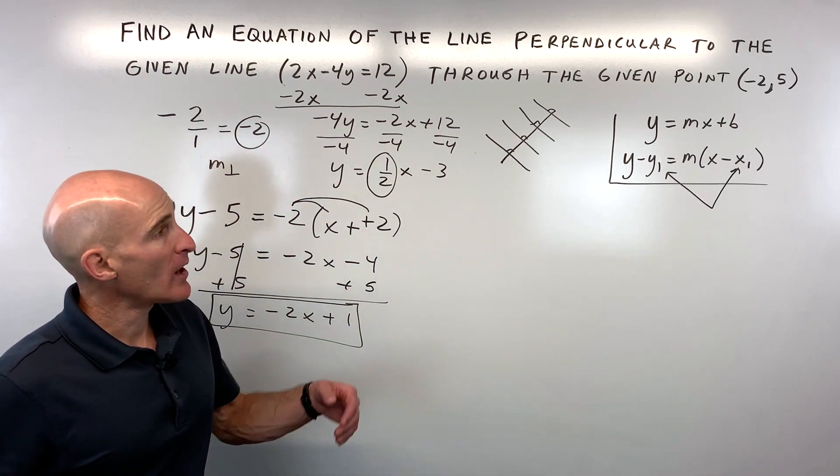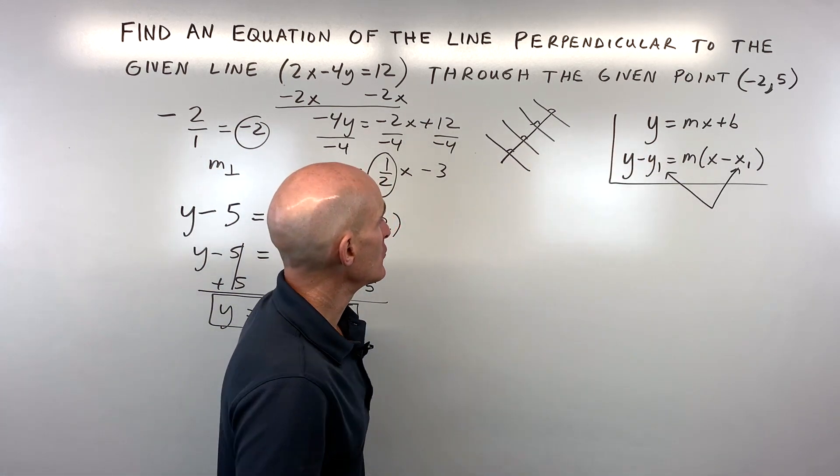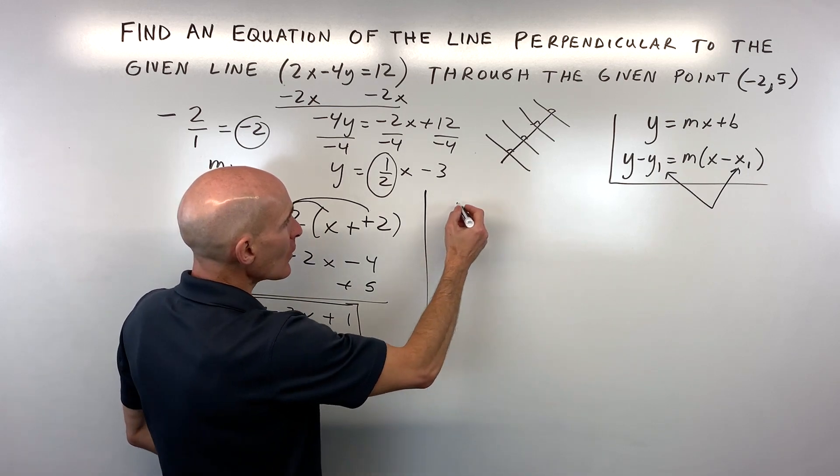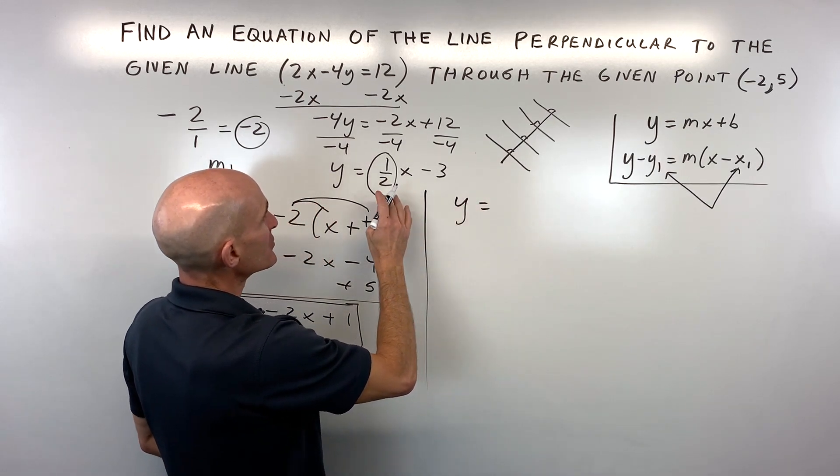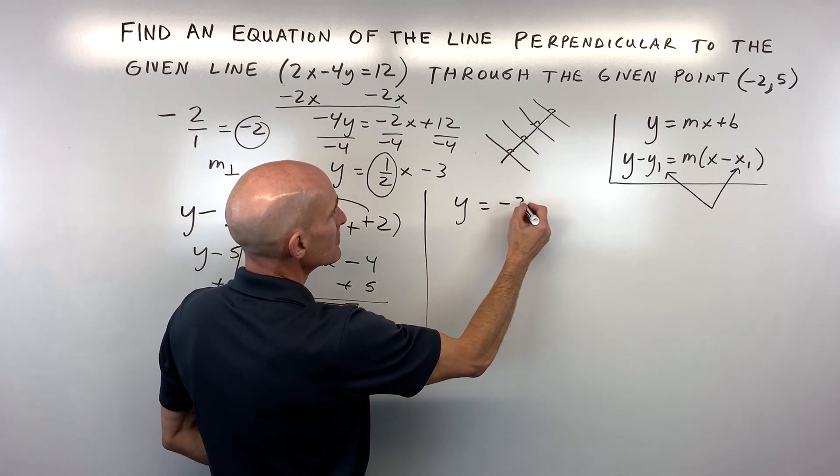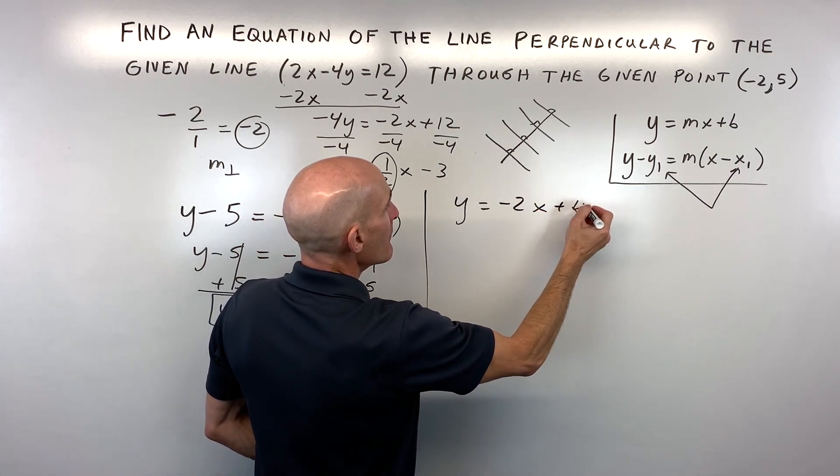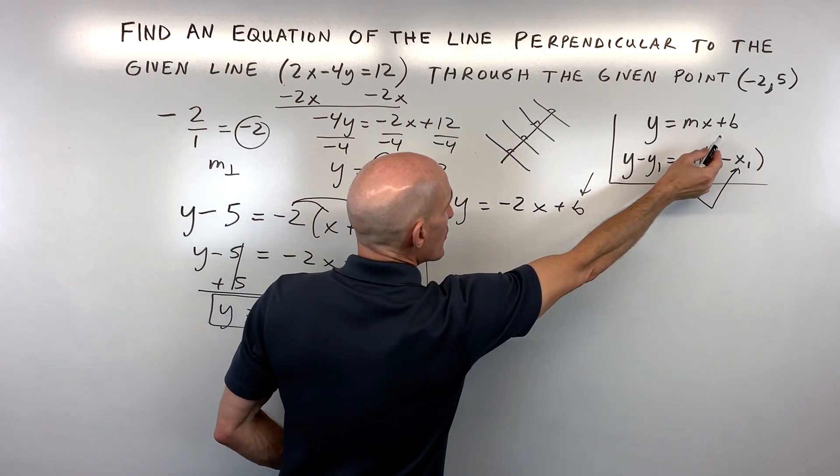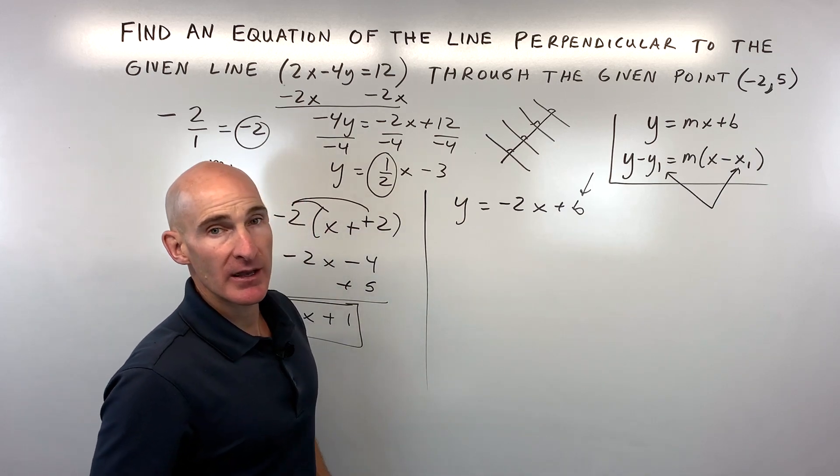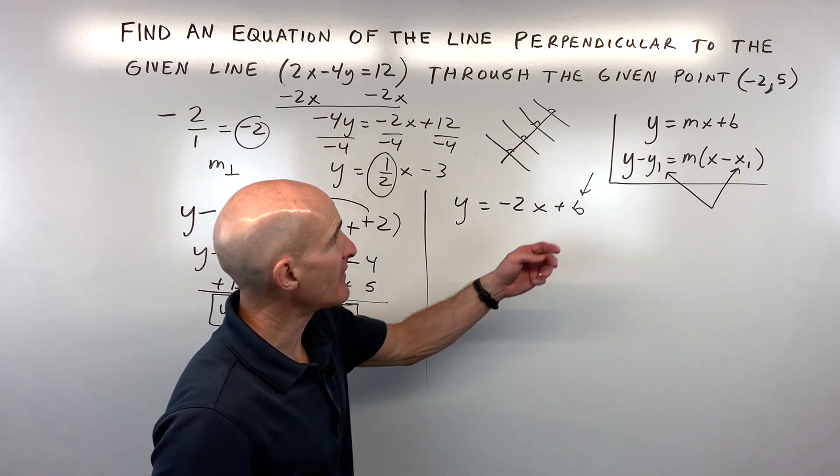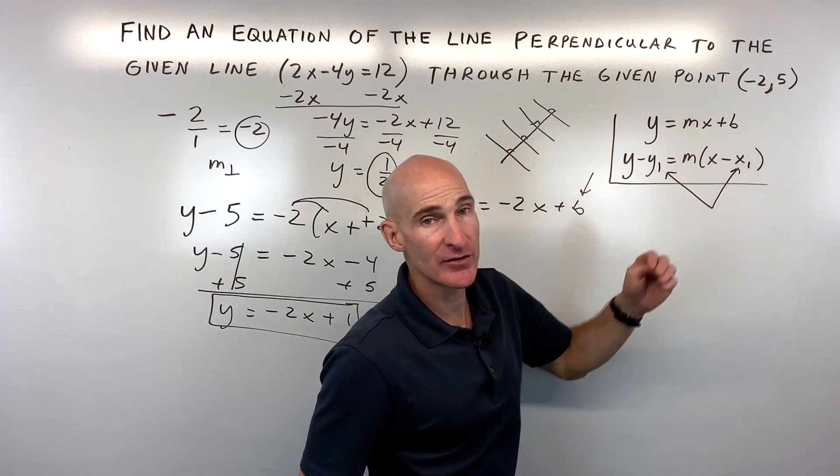Now we can do this another way by using the slope-intercept form, and you might prefer this method. What you would do is start off by putting in our slope, which is negative 2. That's our perpendicular slope. But we don't know what our b value is. We don't know what our new y-intercept is of our line. So the way we find that is by putting in our point here, negative 2, 5.